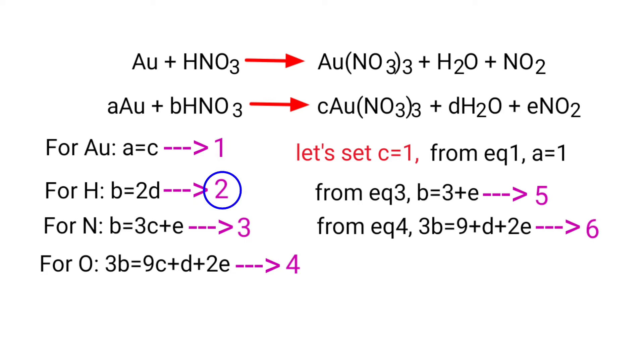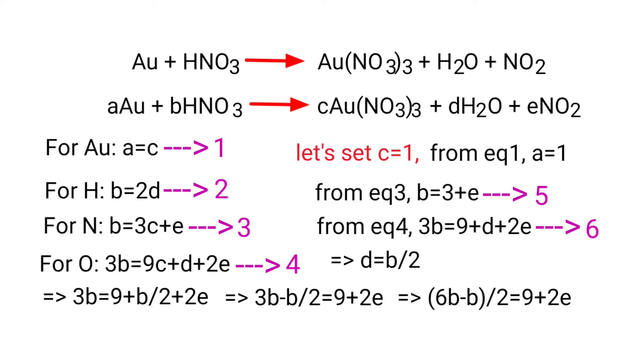From equation 2, b equals 2d, so d equals b divided by 2. Now you can apply the d value in equation 6. Then 3b equals 9 plus b by 2 plus 2e. Then 3b minus b by 2 equals 9 plus 2e. So 6b minus b by 2 equals 9 plus 2e. So 5b by 2 equals 9 plus 2e.